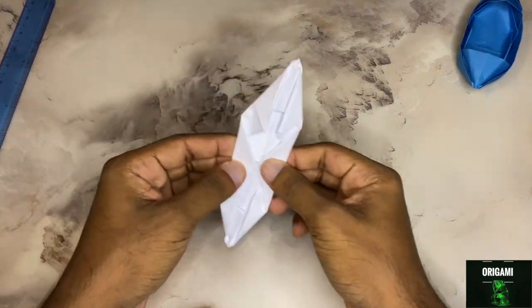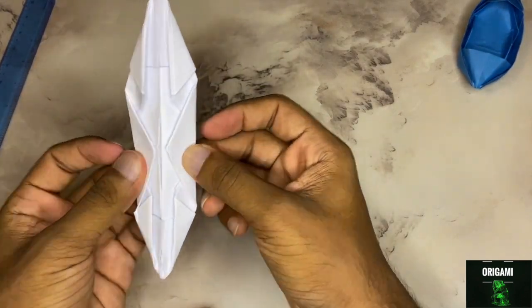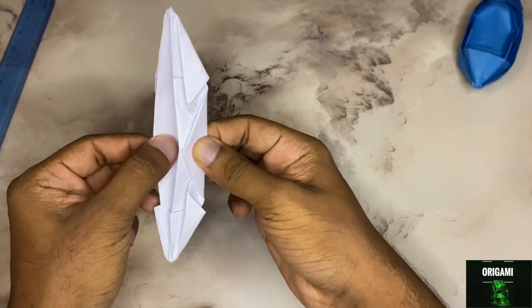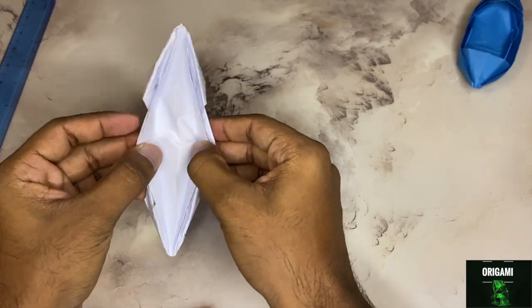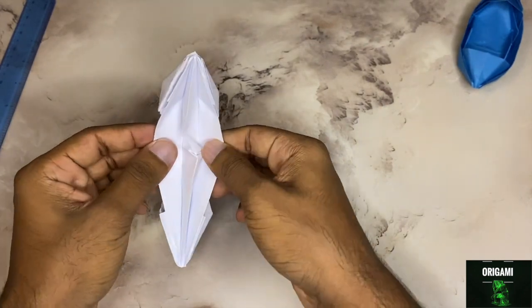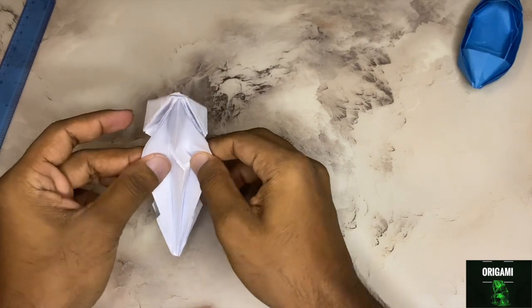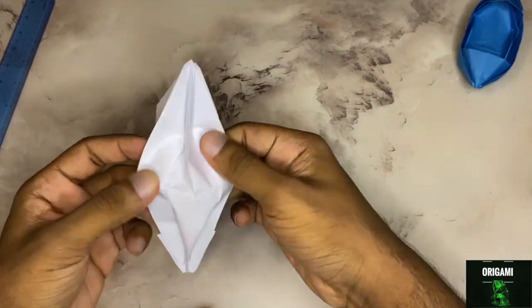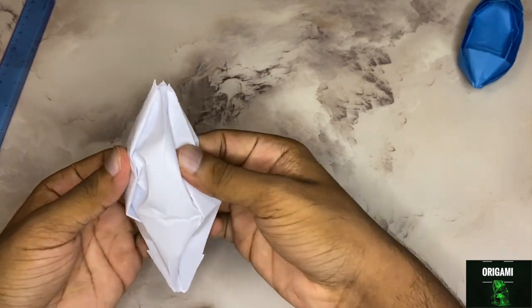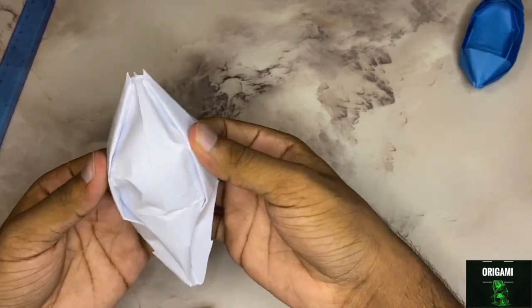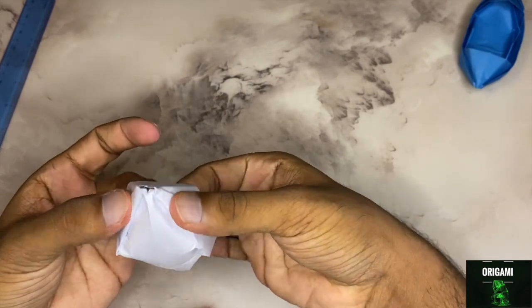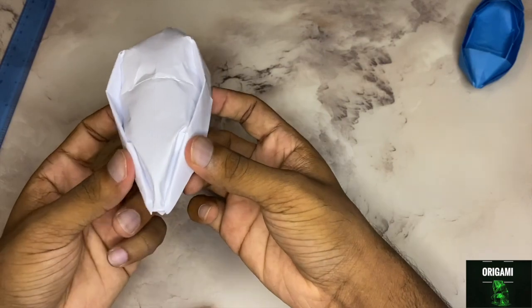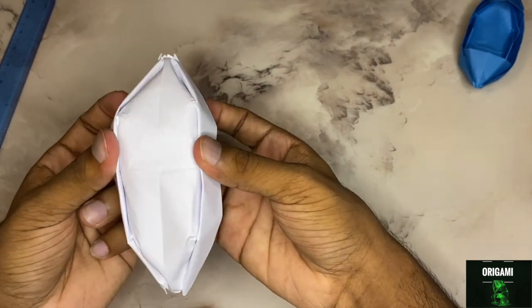The boat is almost done. So the last step is to kind of separate the layers. You just hold it like this on both sides. And you want to reverse fold, so you just push in the insides like that. And just kind of tuck inwards so that it takes the boat shape. Just push inwards. And then just fix the paper a bit.